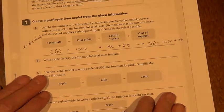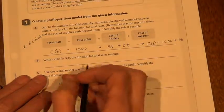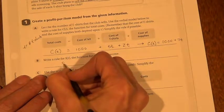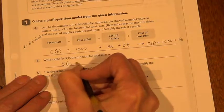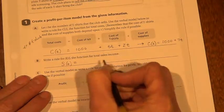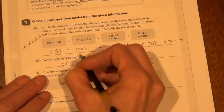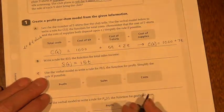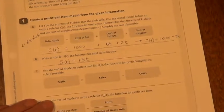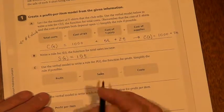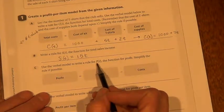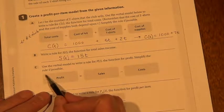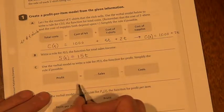Now the next part is write a rule for S(t), the function for total sales. So S stands for sales per t-shirt. That would be $15 per t-shirt. Again, that's what we underlined above. Next they say, use the verbal model to write a rule for the profit, the function for profit. Simplify the rule if possible.